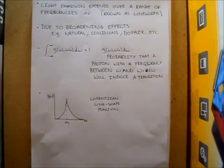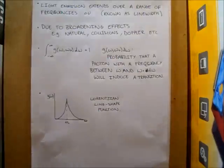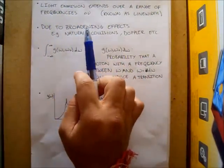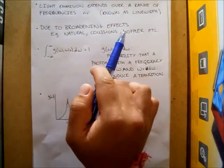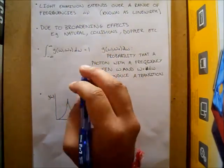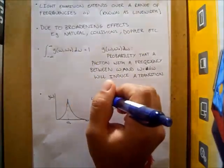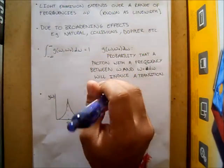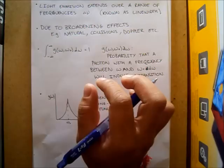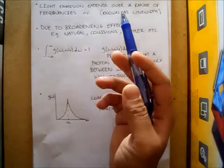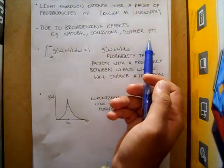I've written out a few notes relevant to natural broadening. The first point states that light emission extends over a range of frequencies, delta nu, also known as the line width. In an ideal case, for example in lasers, you would expect all the frequencies emitted to be at one frequency. However, in reality, the frequencies emitted have a finite range. This is due to broadening effects such as natural broadening, collisions, Doppler effects, etc.